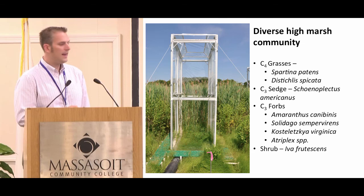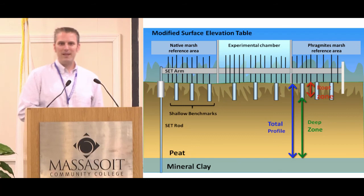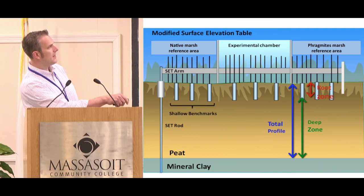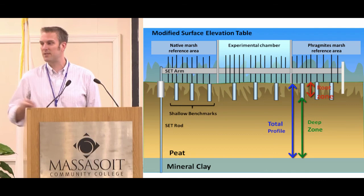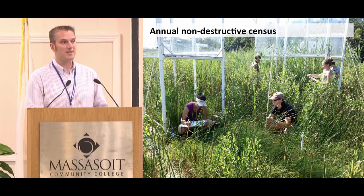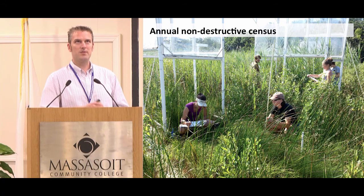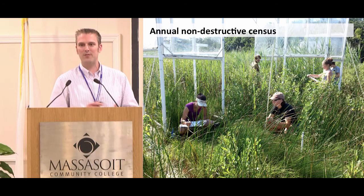We also have a modified surface elevation table — the 'mega arm,' over three meters long — which lets us look at how surface elevation changes in the native marsh reference area, within the experimental chamber, and within the Phragmites marsh area. Every year we count every single plant: every Phragmites plant is genetically identified, all sedges are counted, and grasses are subsampled in 25-centimeter quadrats, giving us a really robust dataset.